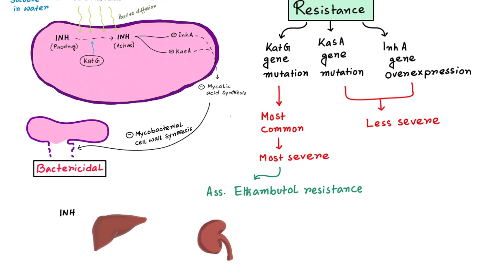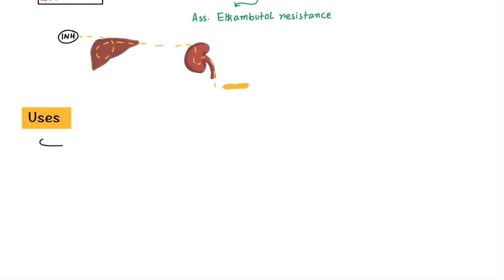You should remember that isoniazid is metabolized by the liver and excreted by the kidney. INH is a first-line drug for tuberculosis and is the drug of choice for latent tubercular infection. It is also used as prophylaxis of TB.